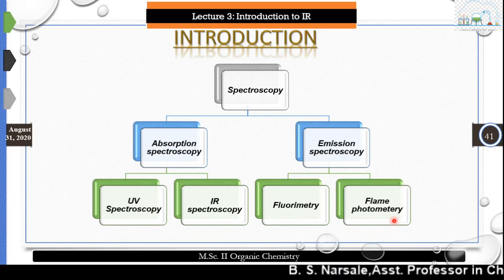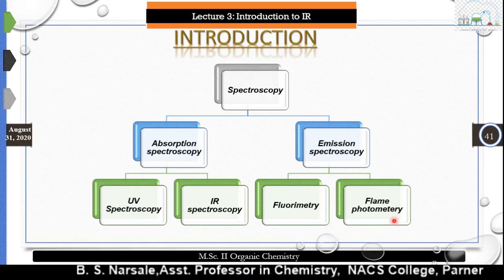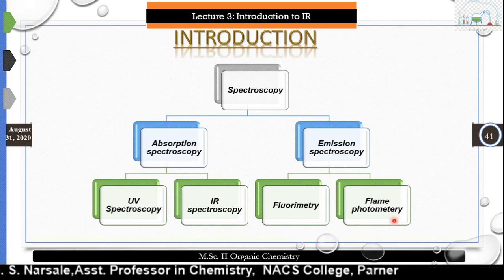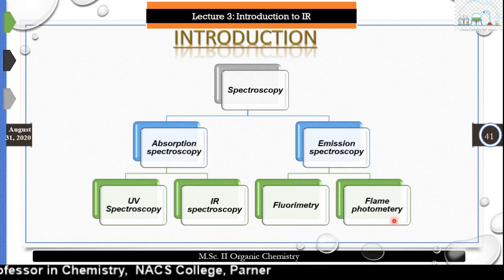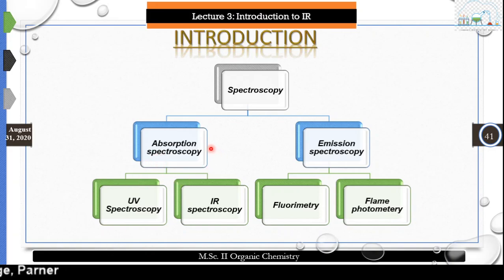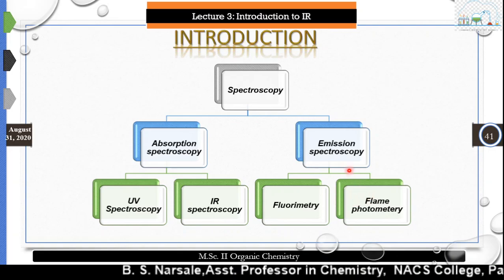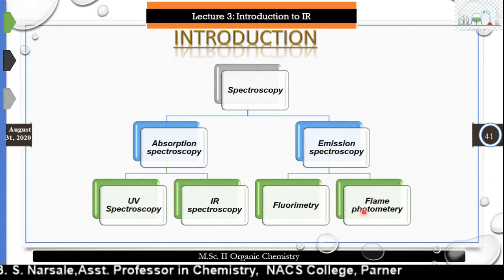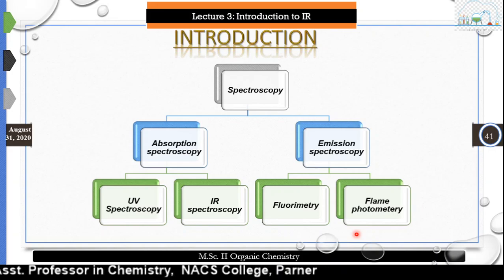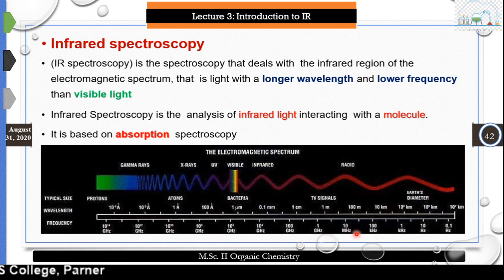We have learned that spectroscopy is divided into two main classes: absorption and emission spectroscopy. We are discussing absorption — compared to UV spectroscopy, today we go for IR spectroscopy. In emission, there are fluorometry and flame photometry, but we focus on absorption spectroscopy.